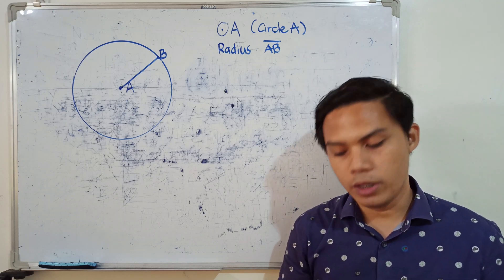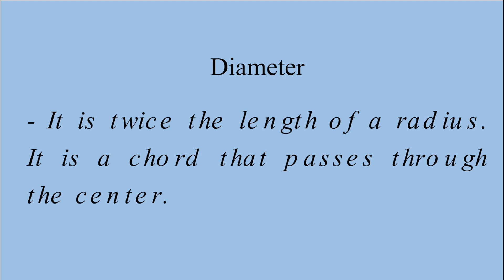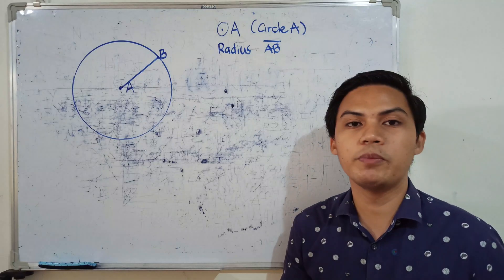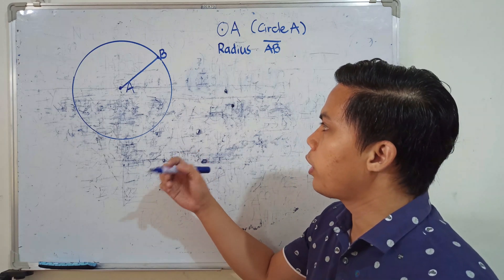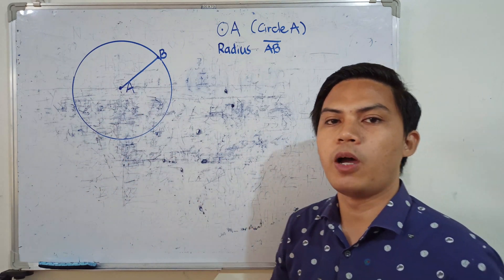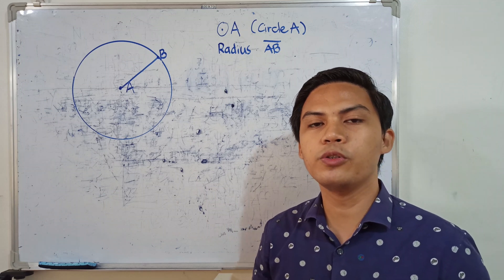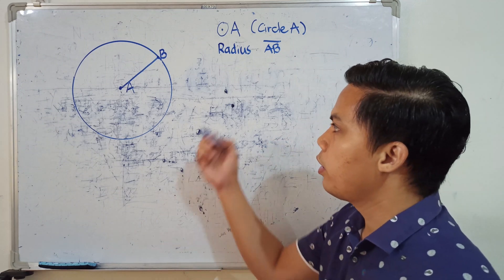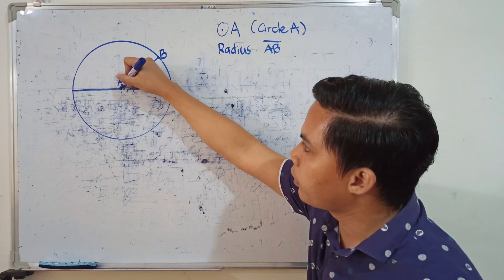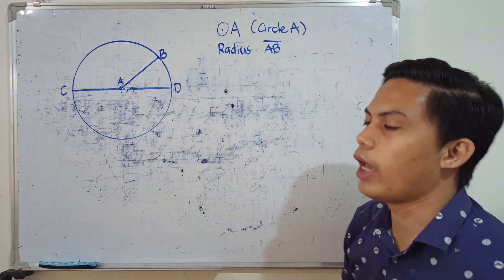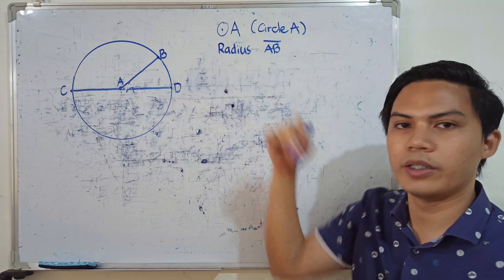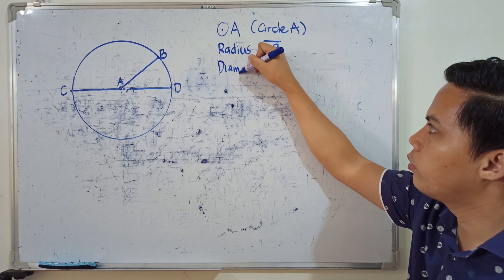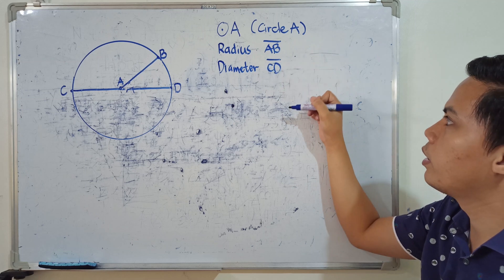Next part — the diameter. Diameter is twice the length of the radius, and it is a chord that passes through the center. We can draw an infinite number of diameters, but the diameter must pass through the center of the circle. Suppose I draw a diameter and name it CD. The endpoints of the diameter would be any points on the circle — so segment CD or DC.